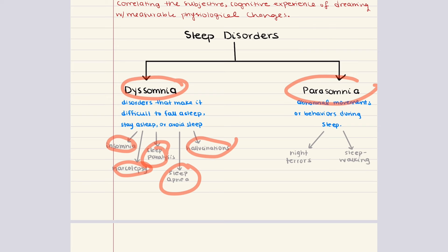The other category of sleep disorders is parasomnias — abnormal movements or behaviors during sleep. They include night terrors and sleepwalking. Night terrors are common in children: periods of intense anxiety occurring during slow-wave sleep, during which children or adults thrash and scream, showing signs of sympathetic overdrive with high heart rates and rapid breathing. Sleepwalking is characterized by being able to do activities while asleep, usually during slow-wave sleep. Some sleepwalkers may eat, talk, have sexual intercourse, or even drive or walk great distances while sleeping with no recollection of the event.